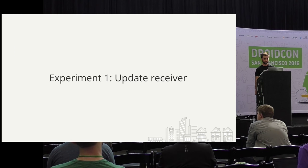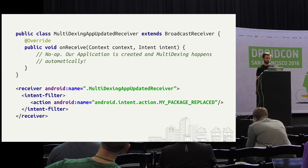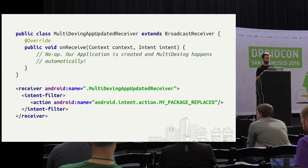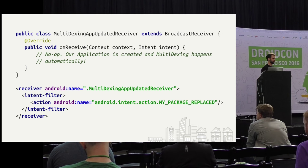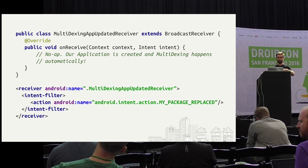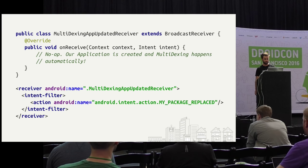Well, here's a hint. We can subscribe to the notification about when our application has been installed. If you think about that, it sounds almost perfect. The APK has changed, we can receive this broadcast and do our Multidexing then, and next time we start up, we don't have to do the first start. So let's try it out. Adding an update receiver is pretty straightforward: extend BroadcastReceiver, set it up in your manifest, make sure you're getting that intent filter. We don't have to put anything in onReceive because our application class gets created and on attachBaseContext we call MultiDex.install.